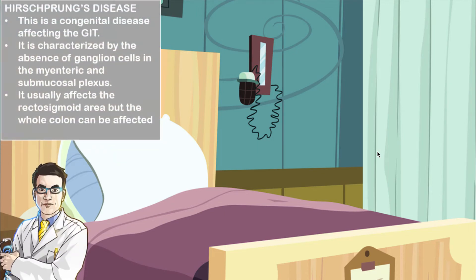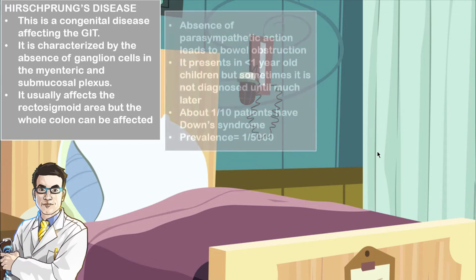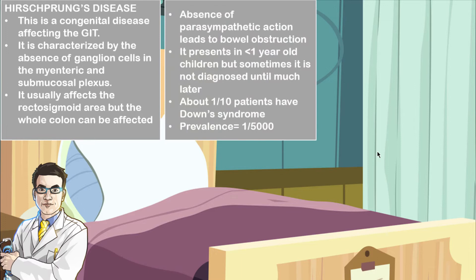Remember that this is one of the congenital diseases that's going to present with intestinal obstruction in a child. It's a congenital disease affecting the gastrointestinal tract, characterized by an absence of ganglion cells in the myenteric as well as the submucosal plexus. The most commonly affected part is the rectal sigmoid area, but it may also involve the entire colon. This absence of parasympathetic action is obviously going to lead to bowel obstruction.